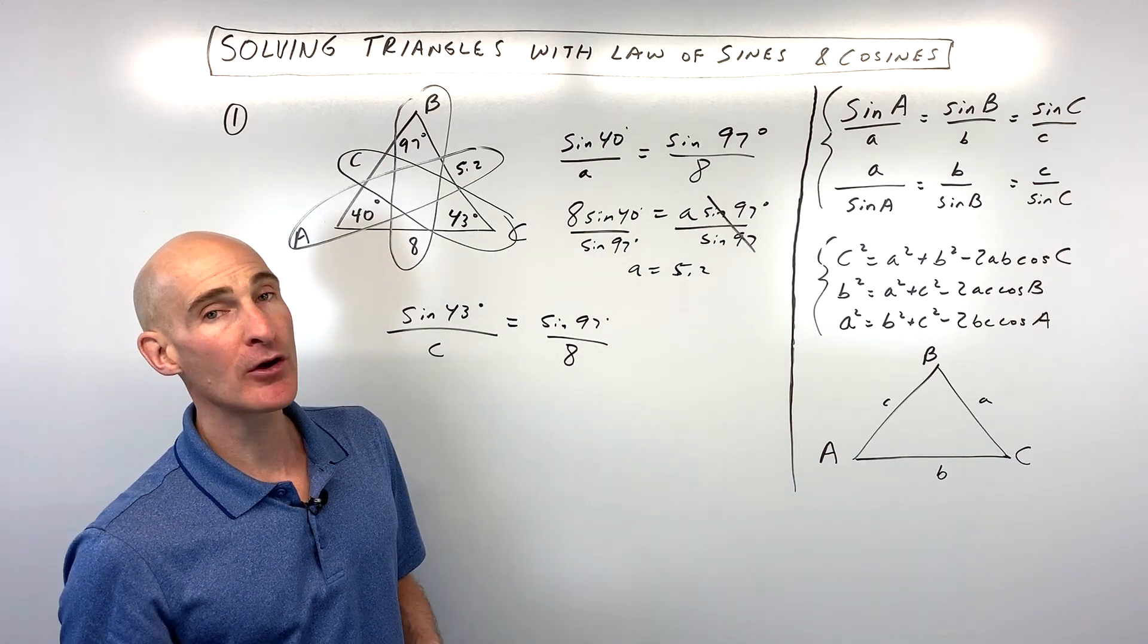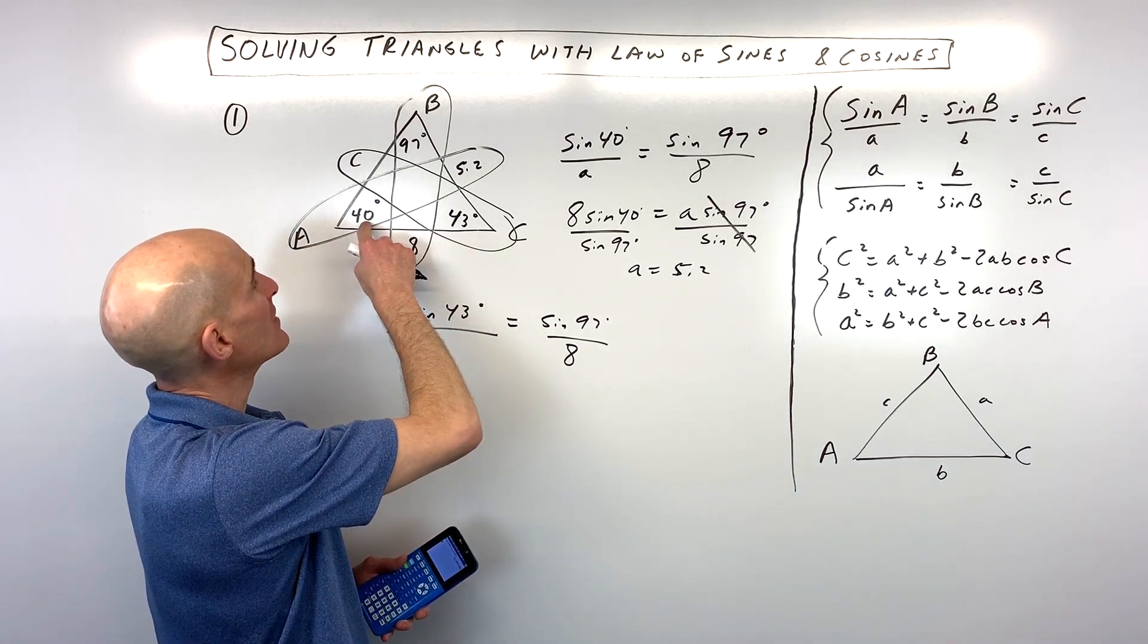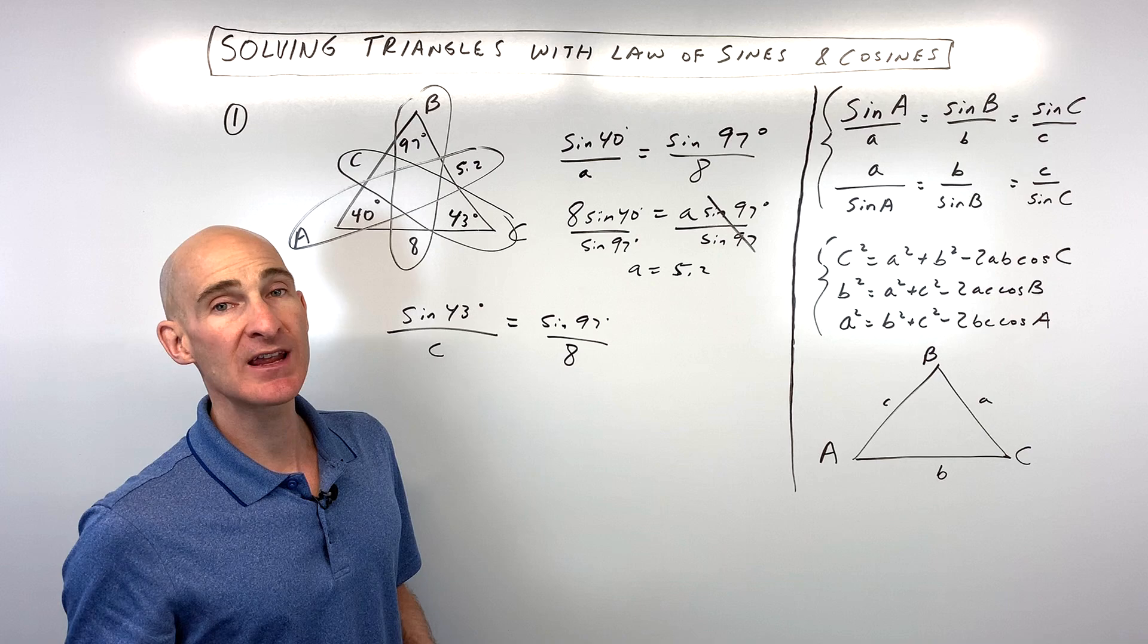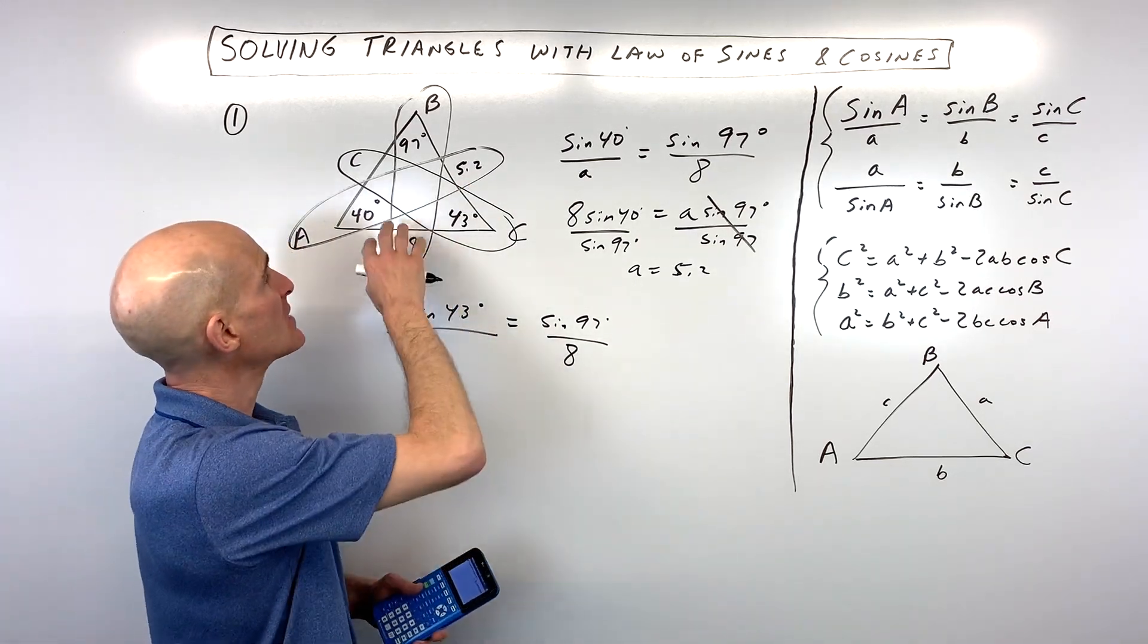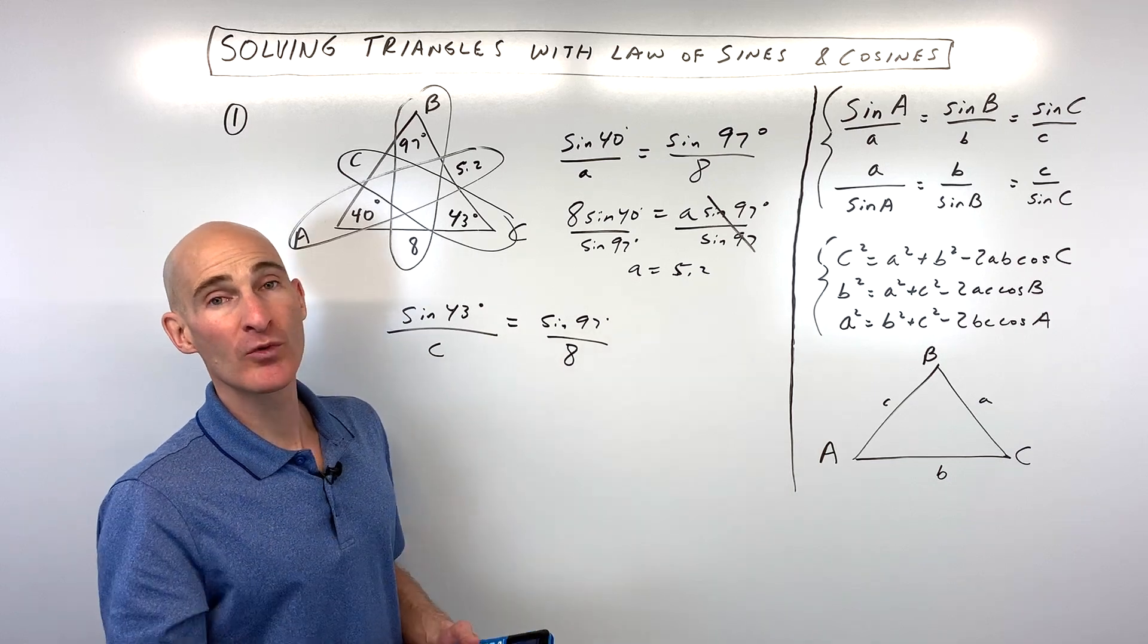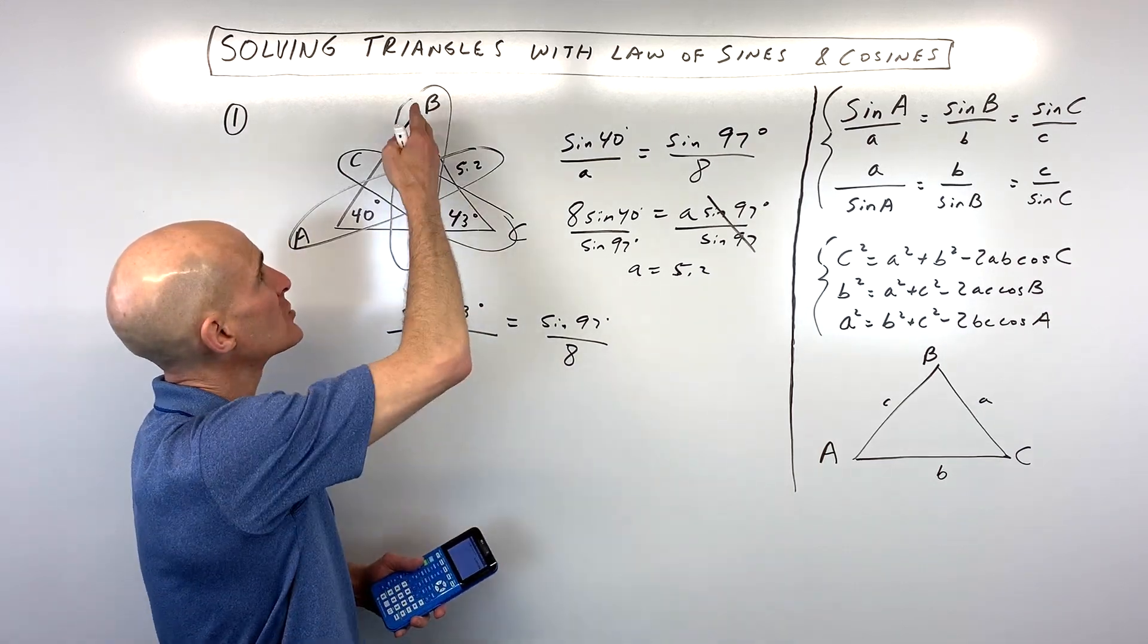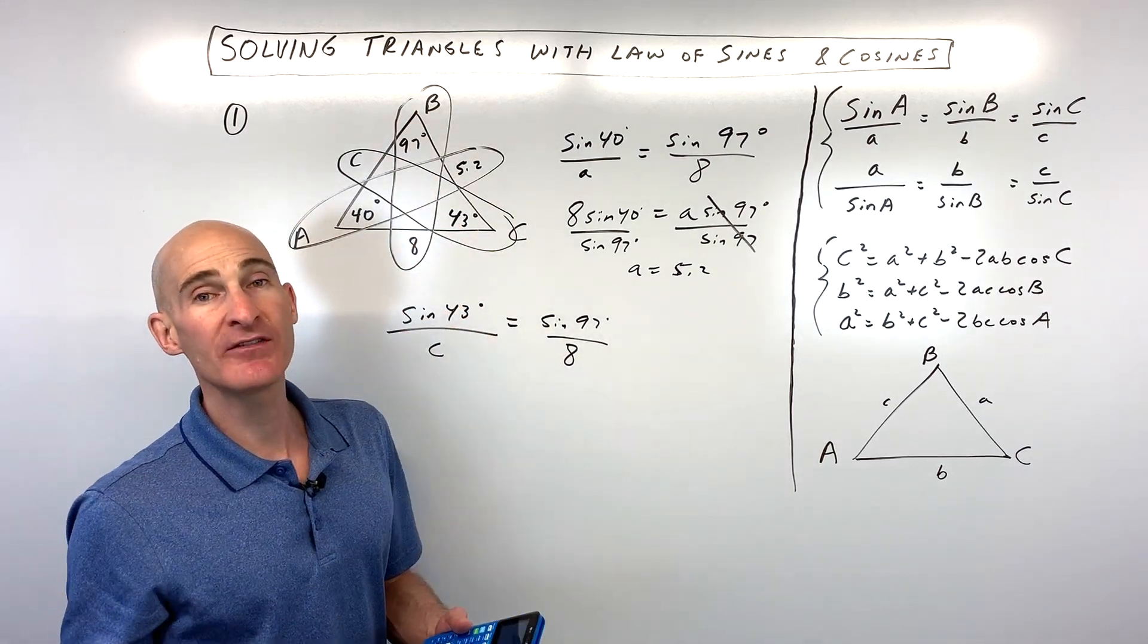Now, you might be saying, Mario, how come you didn't use 40 and 5.2? And the reason that I do that is because 5.2, we actually rounded that answer. And so, if we round again on this next step, we might be a little bit off. So, I tend to try to go ahead and use the original numbers if at all possible.